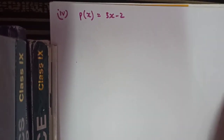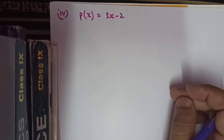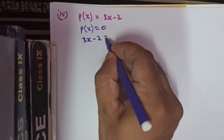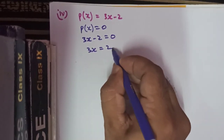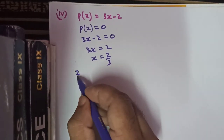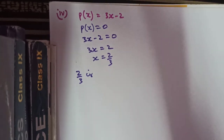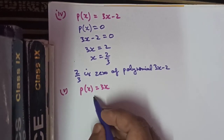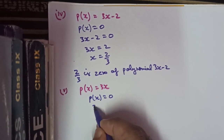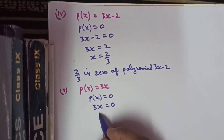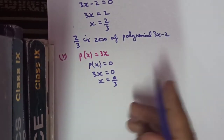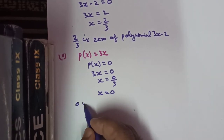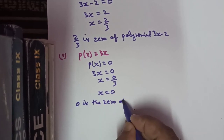For the fourth part, polynomial 3x minus 2 equals 0: 3x equals 2, so x equals 2 by 3. Therefore 2 by 3 is the zero of 3x minus 2. For the fifth part, p(x) equals 3x: equating to 0, 3x equals 0, so x equals 0 divided by 3, which is 0. Therefore 0 is the zero of the polynomial 3x.